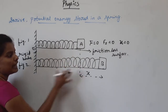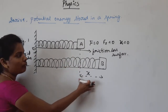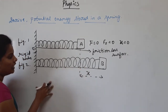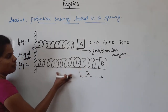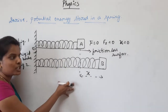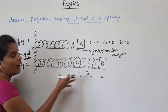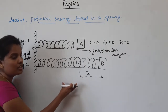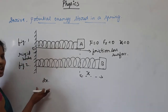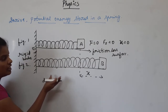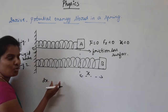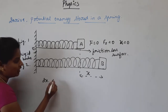Now, what is the work done when we apply force and the spring is stretched? When the spring is stretched by a small distance DX, the applied force becomes constant. Therefore, the small amount of work done equals DW equals F into DX.